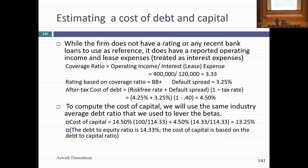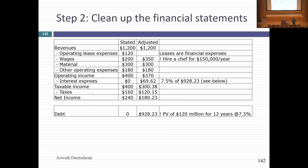That was my first stop at getting a discount rate — essentially a variation of what I do with public companies, with one small twist: I took the market beta and scaled it up using the correlation. The other minor twist was the debt-to-equity ratio judgment. Second stop: I redid the financials by putting in a cost for the chef — $150,000. I had to do my homework on how much it would cost to get a well-regarded chef. That lowers my income. But capitalizing leases pushes up operating income. My adjusted operating income is $370,000 instead of $400,000.